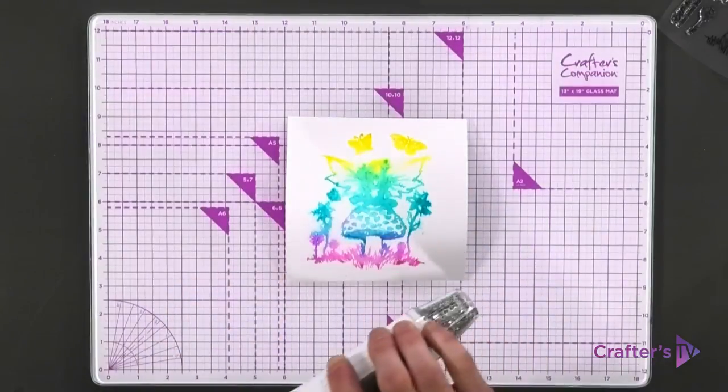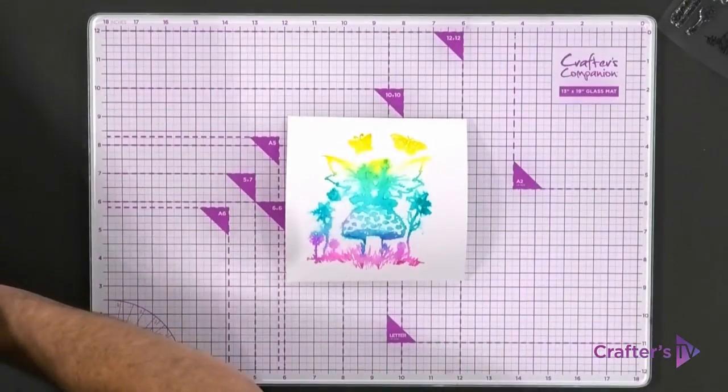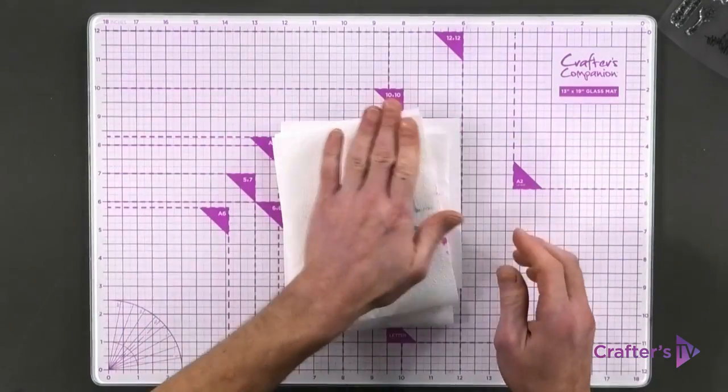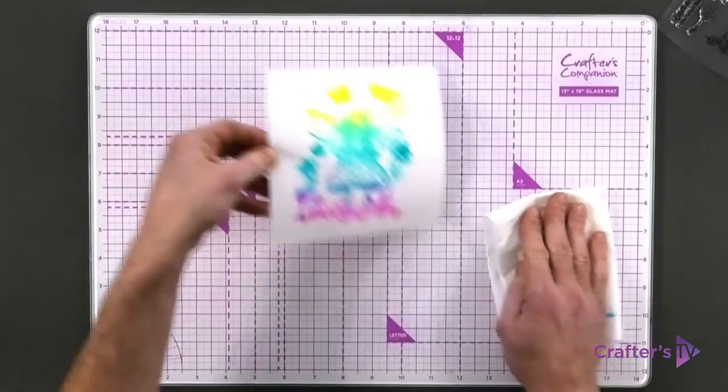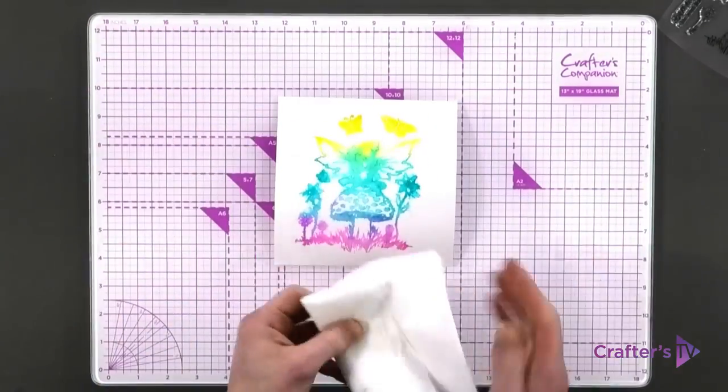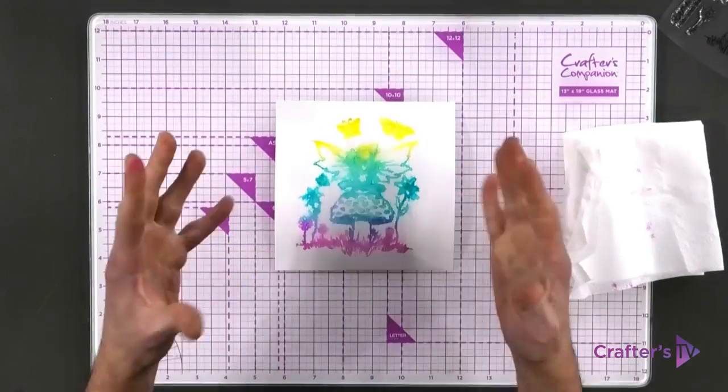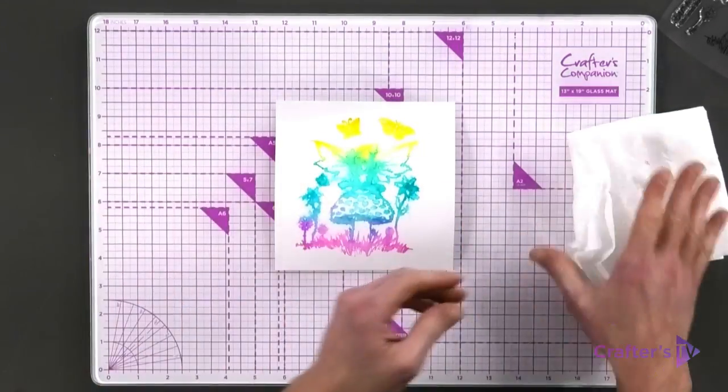When it's nearly dry, take a bit of kitchen roll and just dab that bit of excess off. We've got this nice dry area. You can still see the outline of the stamp but the colors have bled out all the way around.